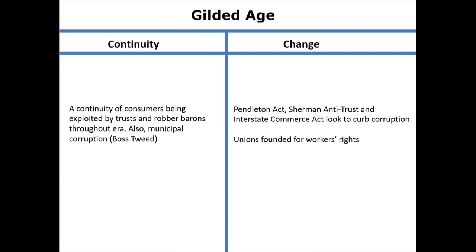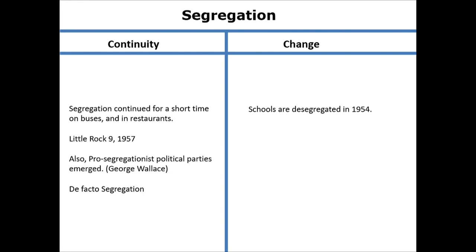The Gilded Age sees a lot of change — the Pendleton Act, the Sherman Antitrust Act, the Interstate Commerce Act, founding of unions. But the continuity is the exploitation of the rich over the poor, trusts, and municipal corruption under Boss Tweed. Despite the legislation, it continues through the Gilded Age. Segregation: schools are desegregated in 1954 — that's a change. However, segregation continues in restaurants, and the Little Rock Nine still face resistance. De facto segregation continues today, with people self-segregating despite what the Supreme Court says.